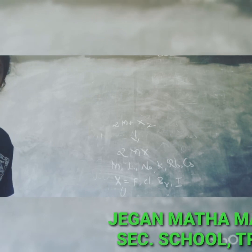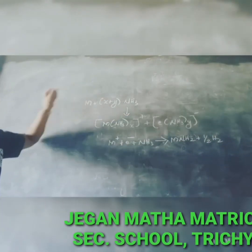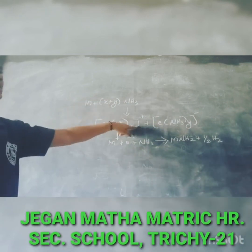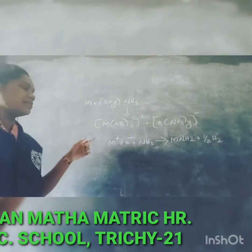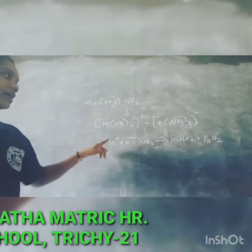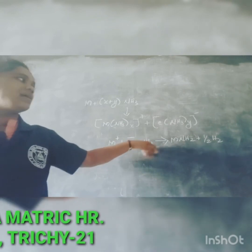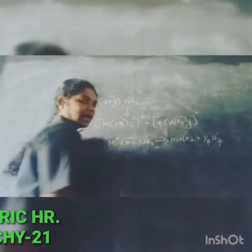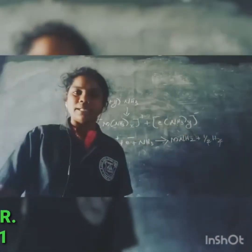The equation for dissolving in liquid ammonia is: M + x(NH₃) → M(NH₃)ₓ⁺ + e(NH₃)ₓ⁻ (ammoniated electron). In the presence of ammonia, the electron reacts to form MNH₂ and hydrogen gas (H₂) is released. These are the chemical properties of alkali metals. Thank you students.